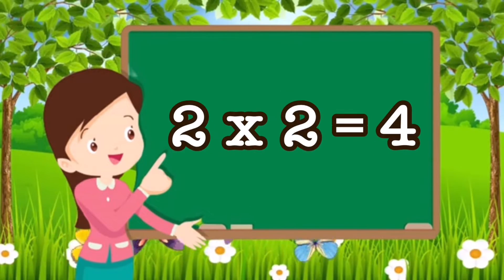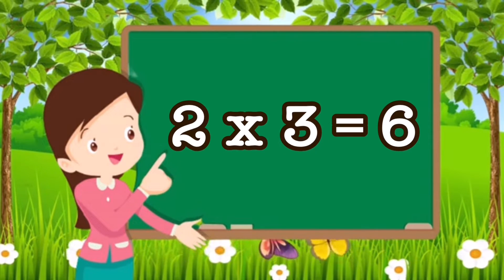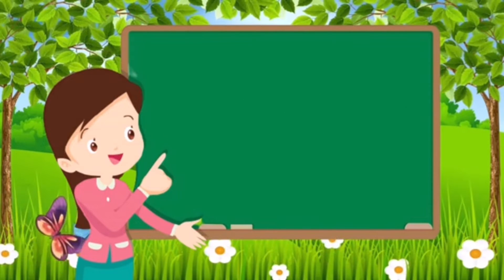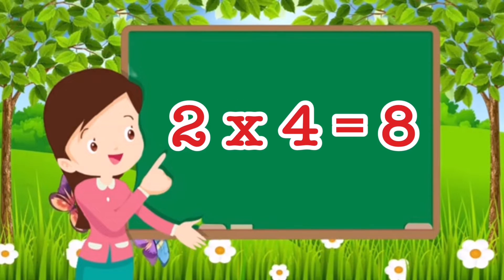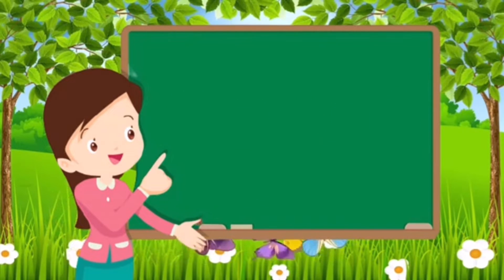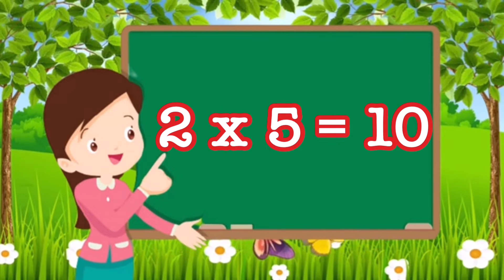2 twos are 4. 2 threes are 6. 2 fours are 8. 2 fives are 10.